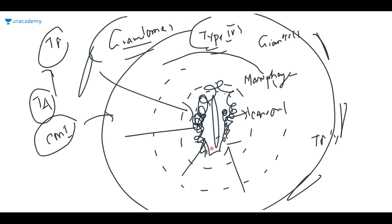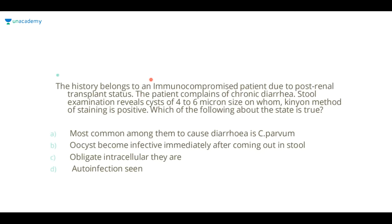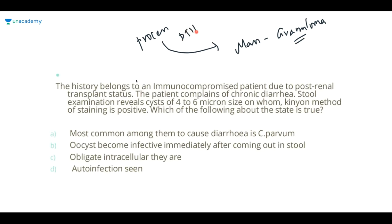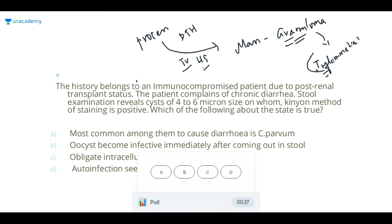The granuloma mass — the process that led to its formation is called delayed type hypersensitivity (type 4 hypersensitivity reaction), and the active granuloma is called granulomatous inflammation. Now look at the question: the history belongs to an immunocompromised patient. Some people said cyclospora, some said cryptosporidium, some said isospora. These are the three major organisms under Apicomplexa / Eimeria complex.